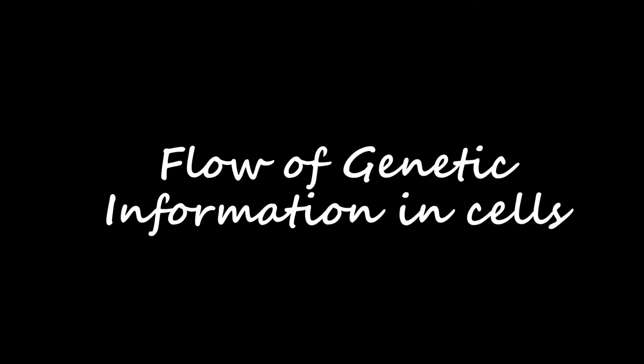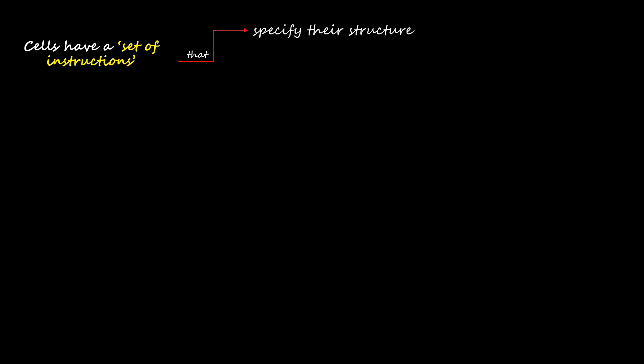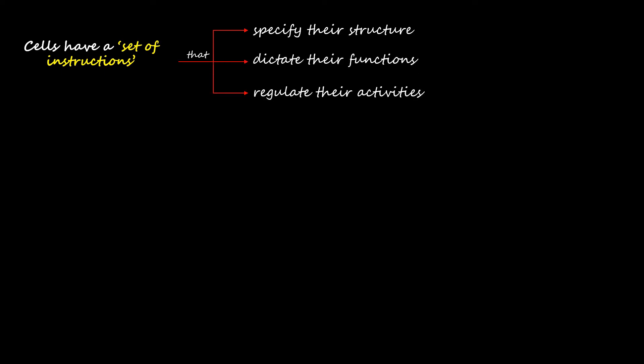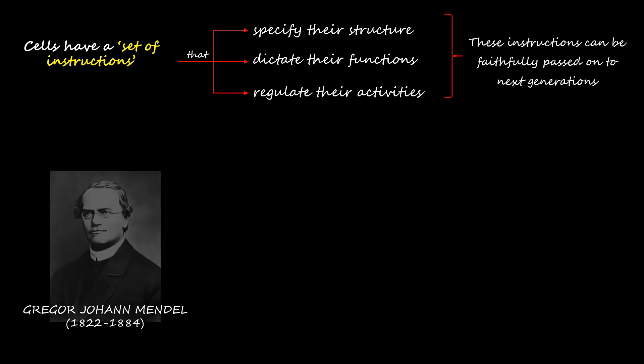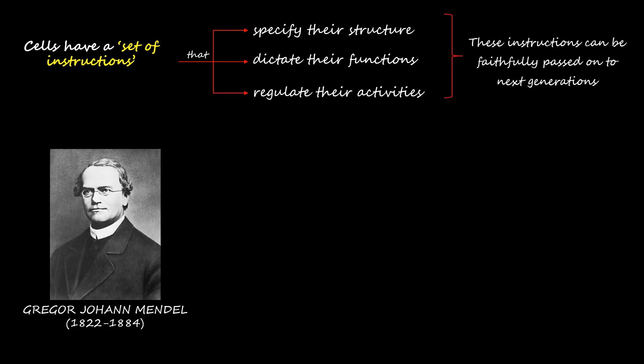The flow of genetic information in cells: cells have a set of instructions that specify their structure, dictate their functions, and regulate their activities. These instructions can be faithfully passed on to the next generations or the daughter cells.